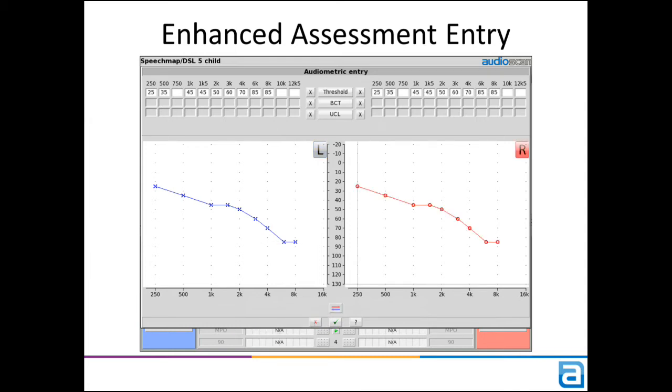Further data types can be entered in the same window. For example, if you had bone conduction thresholds, you would select the BCT button. These can then be entered on the same graph.